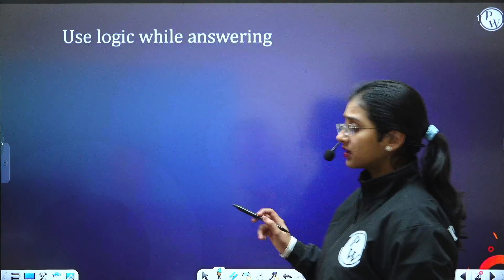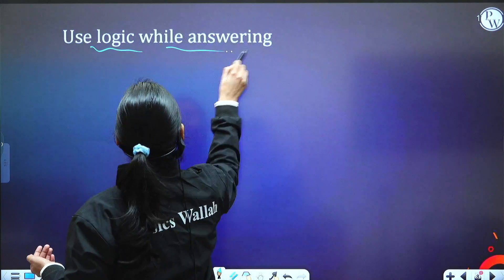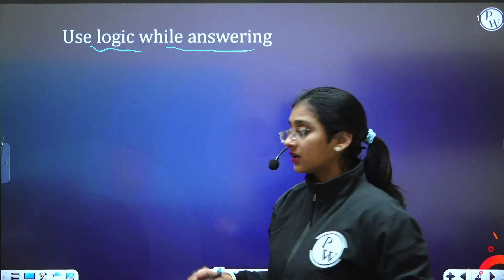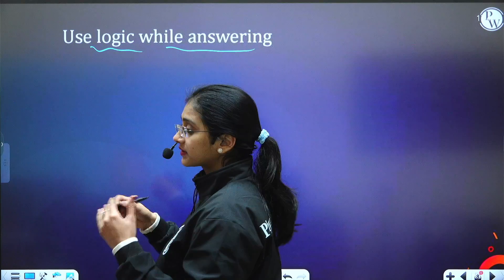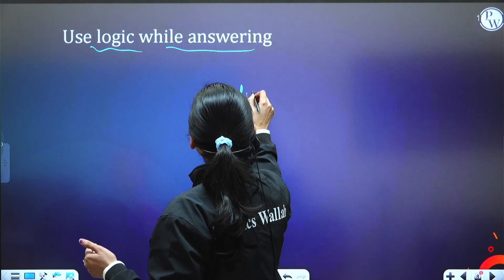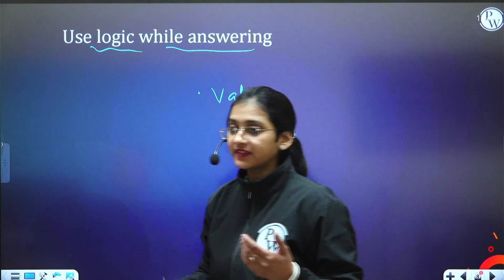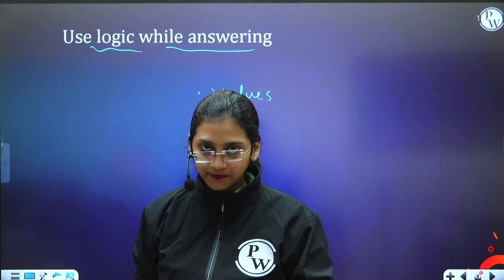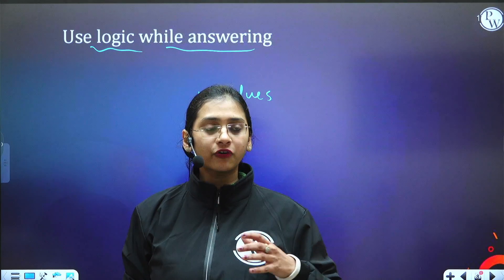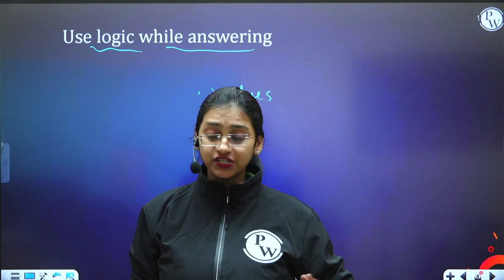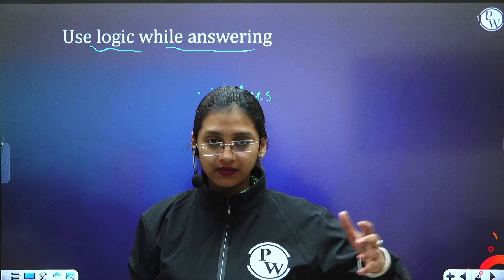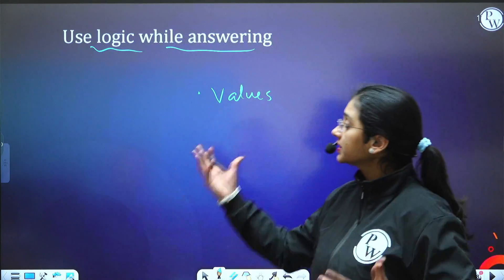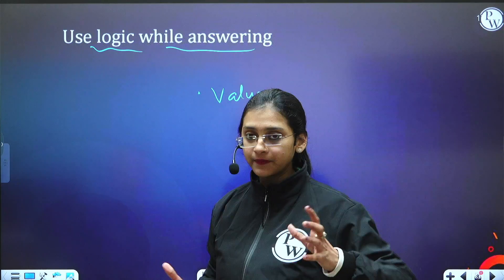When it comes to Maths, Physics, or Chemistry, make sure you relate to the right values. For example, if a question expects an answer in meters but one of the options is given in ml, you can eliminate that option right away. Using a combination of all these techniques will help you guess the right answer.